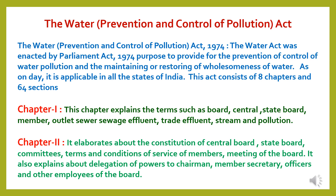Here to study the Water Prevention and Control of Pollution Act. The Water Prevention and Control of Pollution Act 1974 was enacted by Parliament to provide for the prevention and control of water pollution and the maintaining or restoring of wholesomeness of water. It is applicable in all the states of India and consists of eight chapters and 64 sections. Chapter 1 explains terms such as board, central board, state board, member, outlet sewer, sewage effluents, trade effluents, stream and pollution.